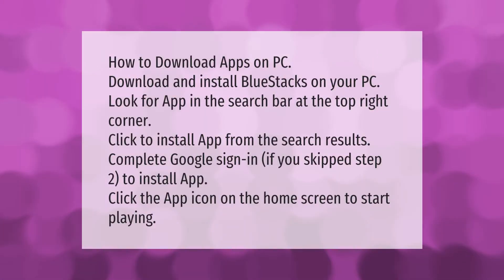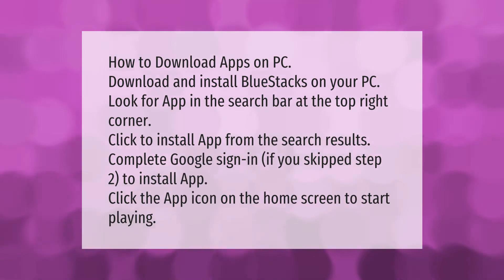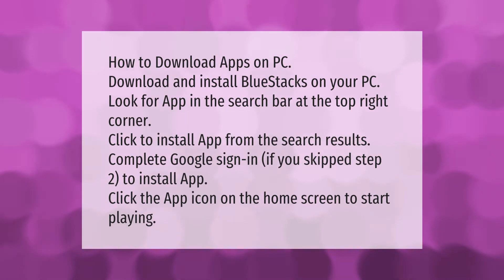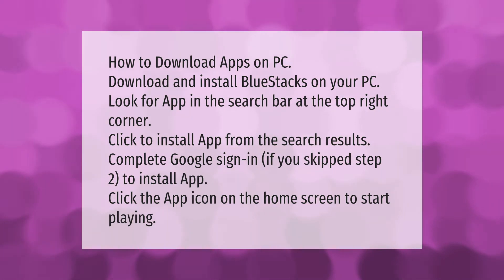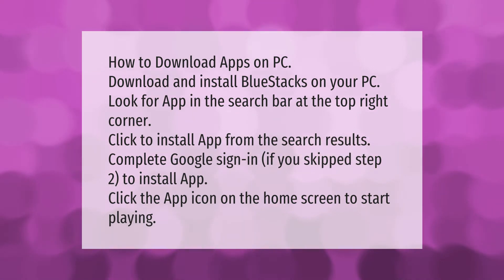How to download apps on PC: download and install BlueStacks on your PC. Look for the app in the search bar at the top right corner, click to install the app from the search results, and complete the Google sign-in. Click the app icon on the home screen to start playing.